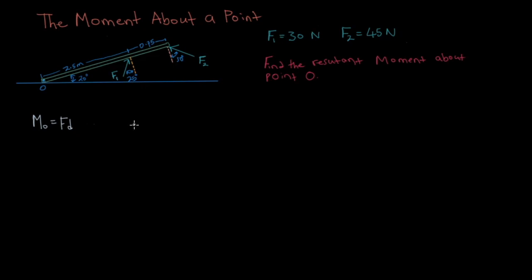For example, if we have a point here which we'll call O and we want to find the moment about it, we have this bar. We have this bar and its distance or its length is represented by the character D. And then we apply a perpendicular force to it called F. Then the moment is F times D.